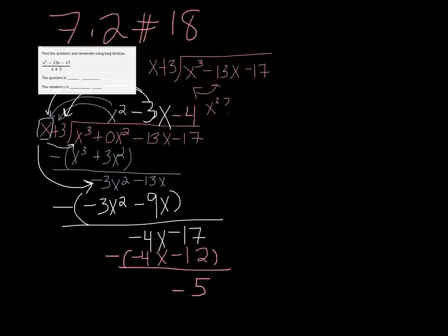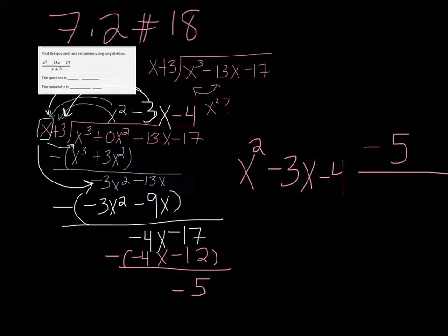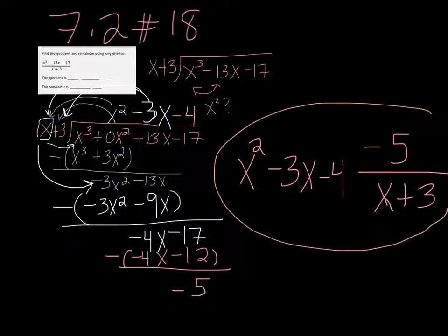So my answer is x squared minus 3x minus 4. And then you take the remainder, which is negative 5, and you put it over the original denominator, so the x plus 3. So that is the answer.